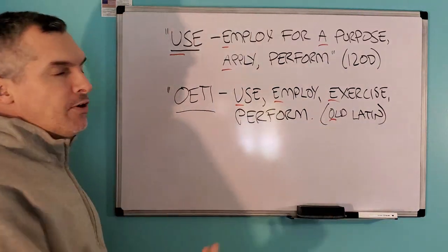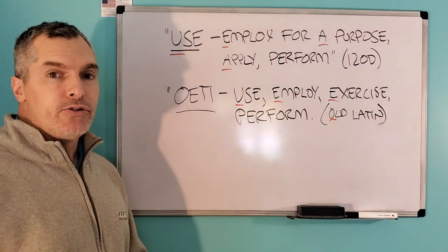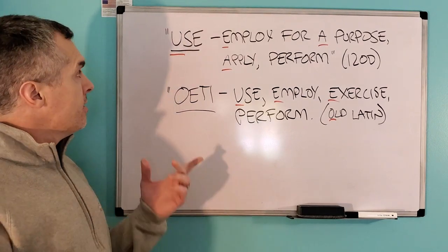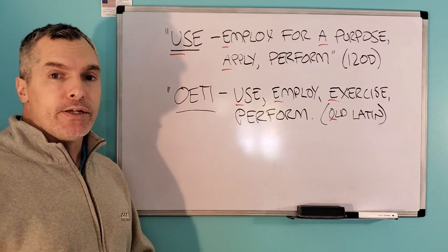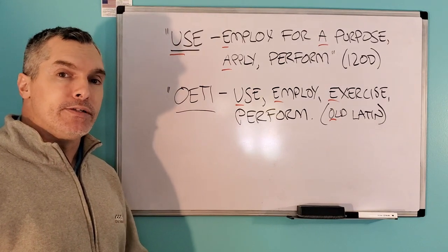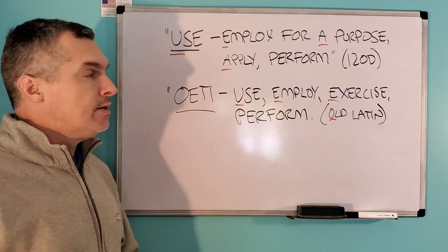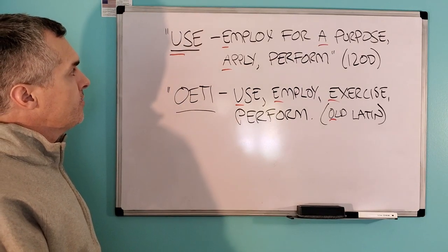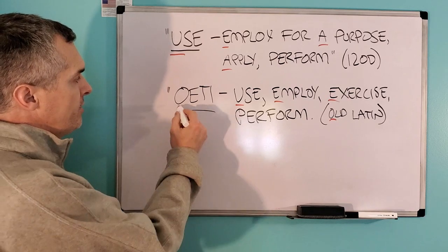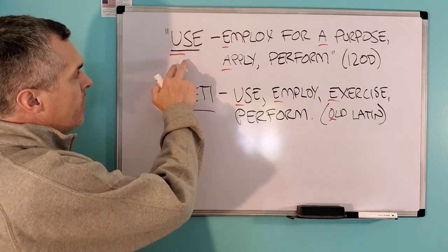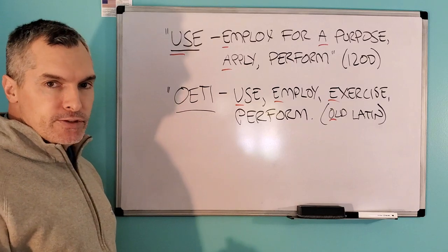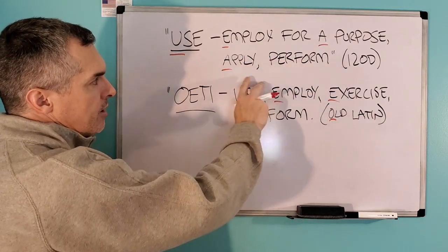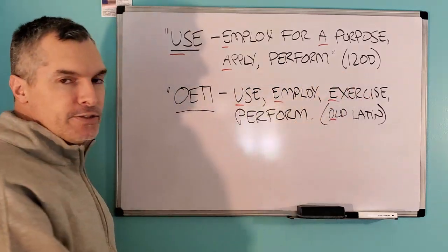I've also made a video giving some clarity to why that is, i.e. why a vowel in front of a consonant at the beginning of a word means no contract, and I will leave a link to that up there. The purpose of this video, as I mentioned, was to do a salvage for this word. So I looked up the etymology of the word use, and I found that it means employ for a purpose, apply, perform, and that's from the 1200s.